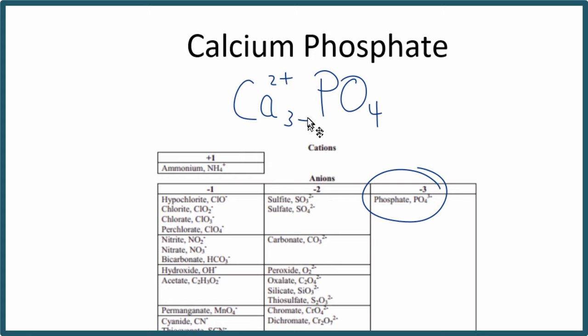So now we just need to crisscross our charges here. Put 3 down here. Let's get rid of the charge. And put the 2 over here. Get rid of the charge. And remember, we need to now put parentheses around it so it makes sense. That's the formula for calcium phosphate using the crisscross method.